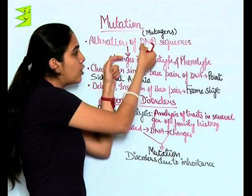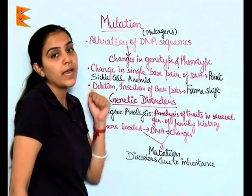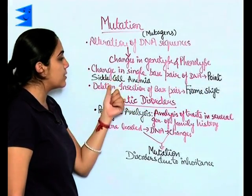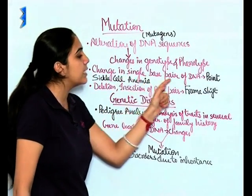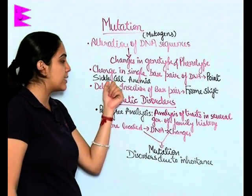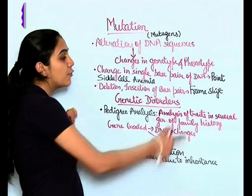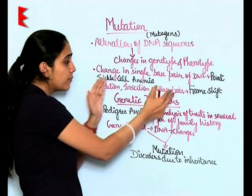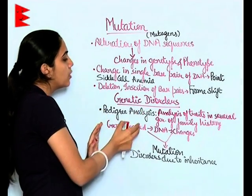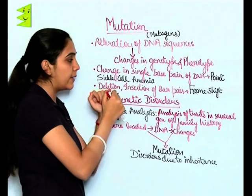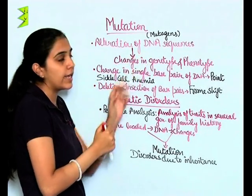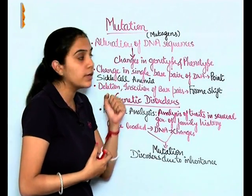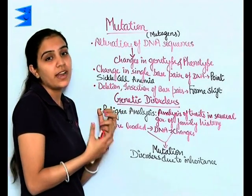These alterations of DNA sequences lead to changes in genotype as well as phenotype. Point mutations are mutations in which a change is found in a single base pair of DNA — for example, sickle cell anemia. Deletion or insertion of a base pair is known as frameshift mutation. These mutations lead to disorders, and since genes are located on DNA, alteration of DNA leads to chromosomal aberrations. It has been found that cancerous cells contain chromosomes which are aberrated.